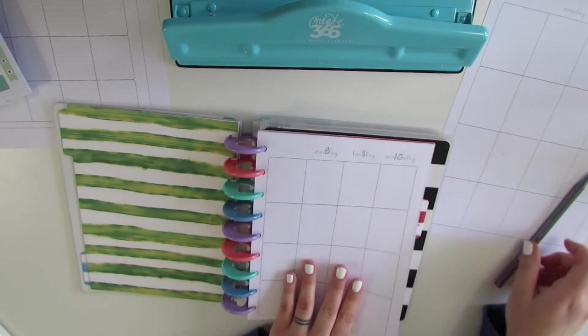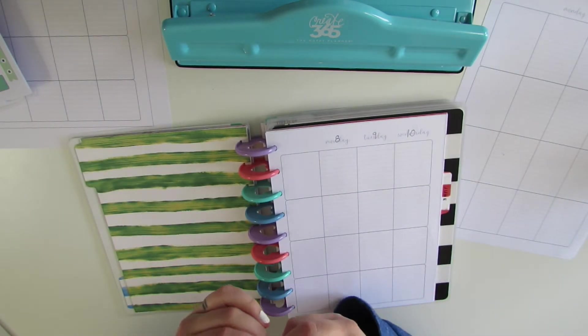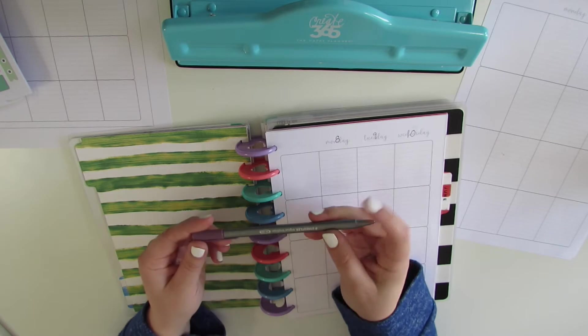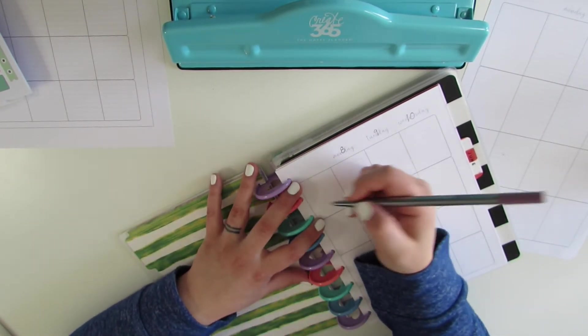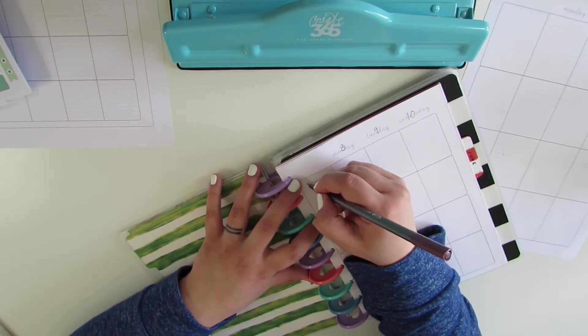Okay, so for mine, I will have things like just writing with a Staedtler fineliner. Mine is going to look more like food log, exercise log, and sleep.